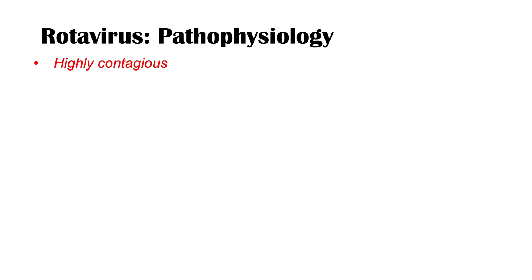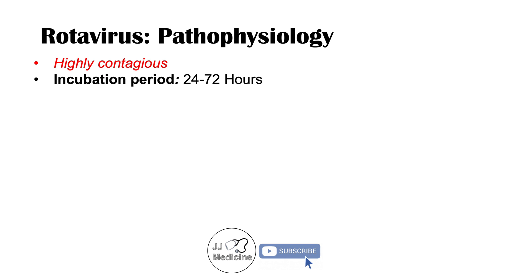What is the pathophysiology of a rotavirus infection? First, rotavirus is a highly contagious virus — you only need to be exposed to a very small amount of viral particles to become infected. The incubation period, from when you become infected to onset of symptoms, is roughly 24 to 72 hours, and usually 48 hours or less.